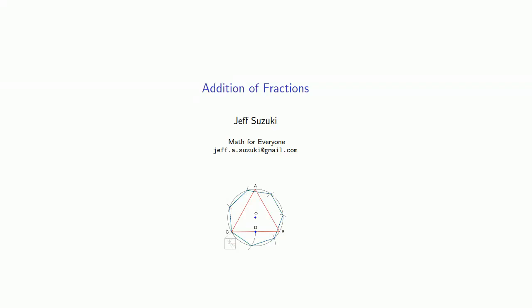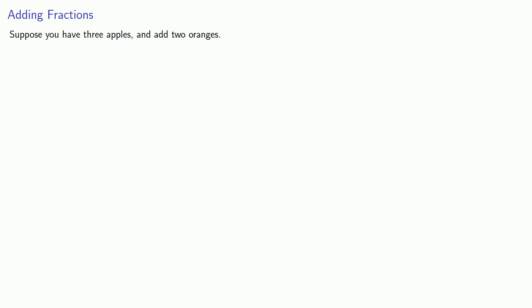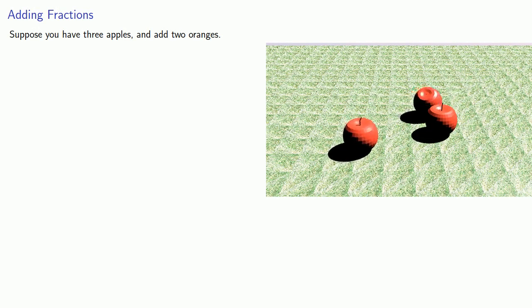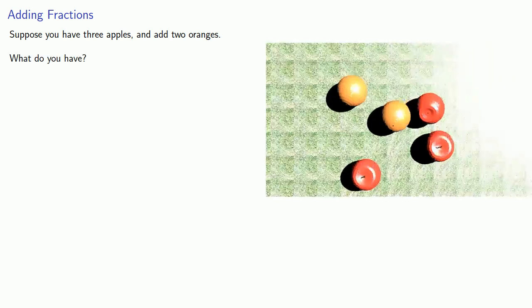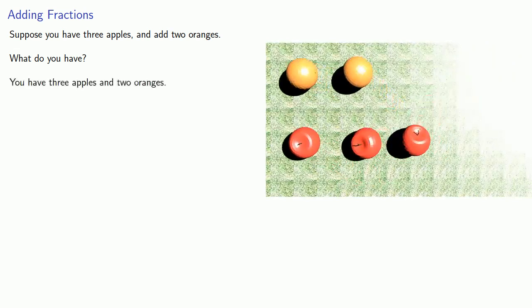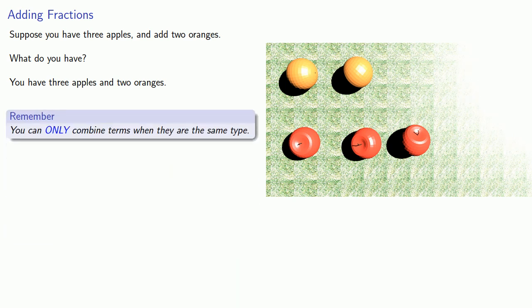So let's do some arithmetic with fractions, starting with the addition of fractions. To begin with, here's an idea to keep in mind. Suppose you have three apples and add two oranges. What do you have? You have three apples and two oranges. The important idea here is you can only combine terms when they are of the same type.